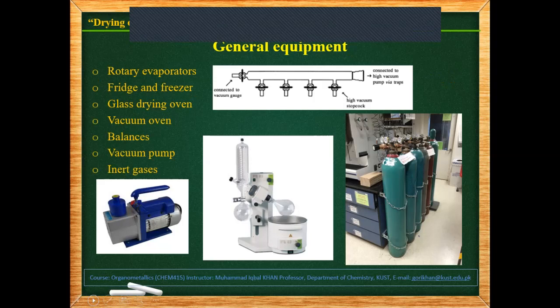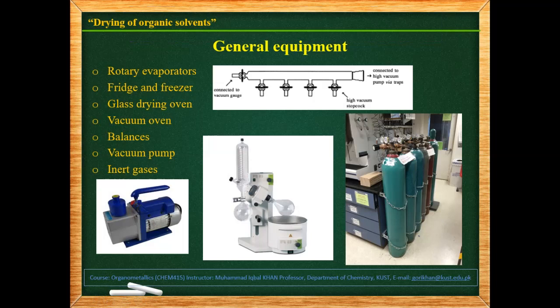These are the general pieces of equipment you can see inside a chemistry lab. For example, rotary evaporators — you can see these here. Then there are fridges and freezers. Lab-scale fridges and freezers are usually a bit different from what we have at home because they have thick insulation, as they contain temperature-sensitive materials. The thick insulation ensures that the inside temperature of the cabinet remains cool for longer periods of time.